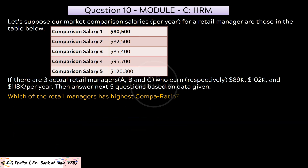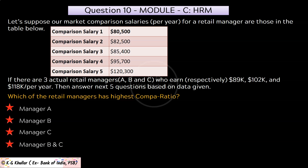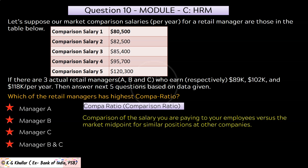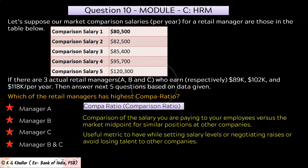The next question is: which of the retail managers has the highest compa ratio? Compa ratio — short for comparison ratio — is a comparison of the salary you are paying to your employees versus the market midpoint for similar positions at other companies. It is a very useful metric when setting salary levels or negotiating raises, and it also helps you avoid losing talent to other companies.